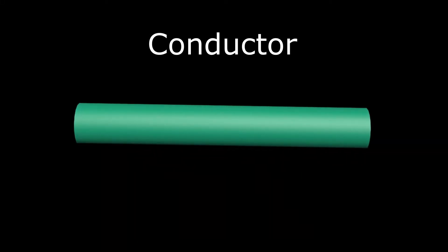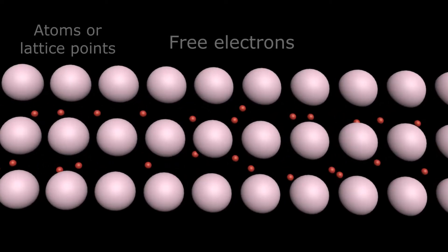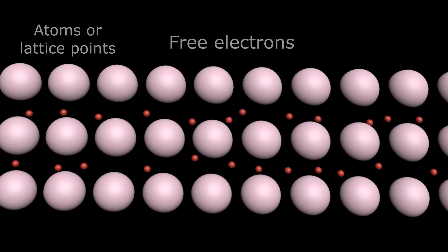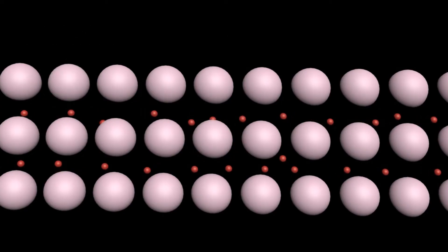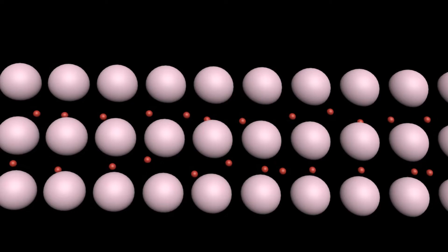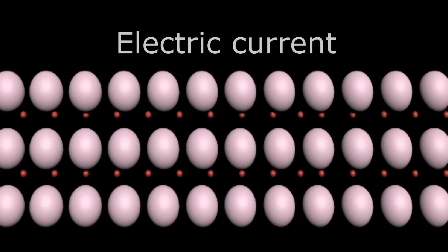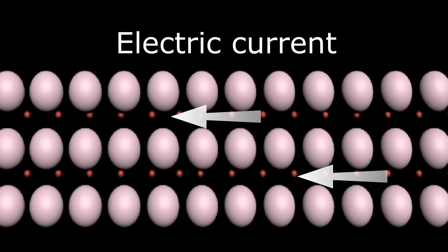In conductors, there are free electrons responsible for the flow of electric current. When we apply an external electric field, these electrons begin moving between the lattice points across the conductor.